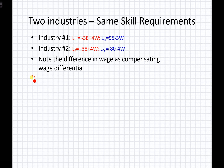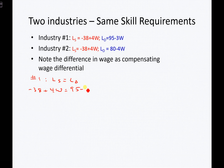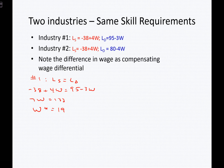Let's look at industry one and identify where labor supply equals labor demand. Setting negative 38 plus 4W equal to 95 minus 3W, we get 7W equals 133. Dividing 133 by 7 gives us a W-star for industry one of $19 per hour.